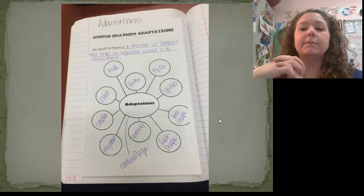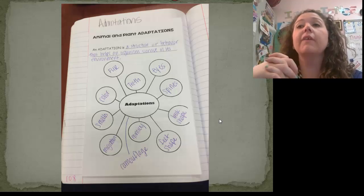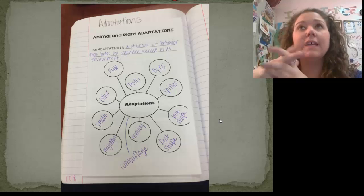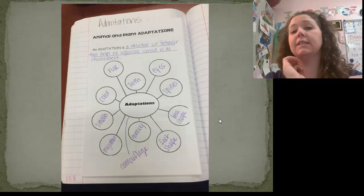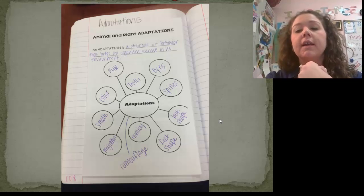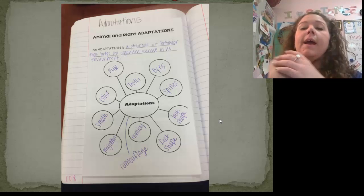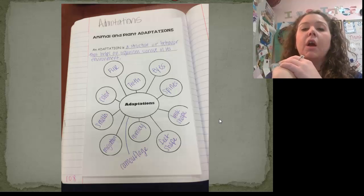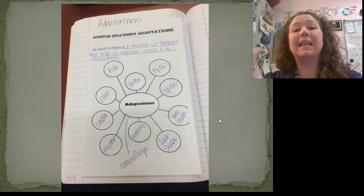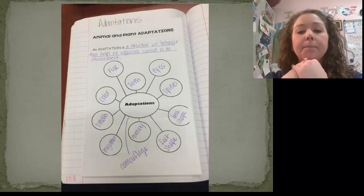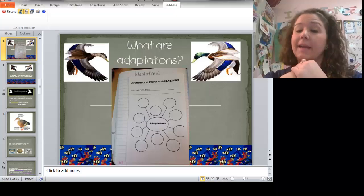So those are adaptations. This is what your journal page should now look like. Remember, an adaptation is a structure or a behavior that allows an organism to survive in its environment. These are many examples of adaptations, but they are not the only examples. We will talk more about some adaptations, especially plant adaptations, by next week.